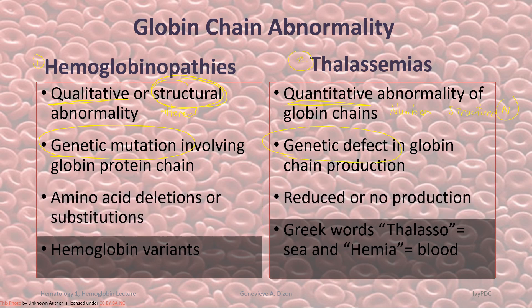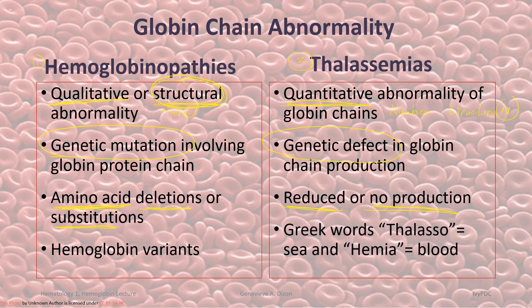The genetic defect for hemoglobinopathy involves amino acid alteration — they can either be deleted or substituted, giving a different structure to the globin chain. In thalassemia, the genetic defect causes a reduced or absent production of the globin chain. In hemoglobinopathy we have different hemoglobin variants. The word thalassemia comes from two Greek words, thalasso and hemia, which references anemia of the sea.